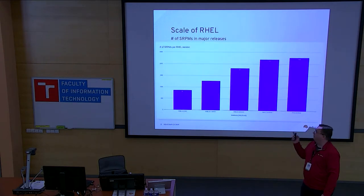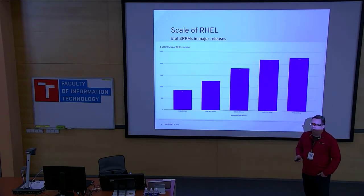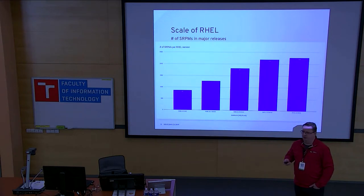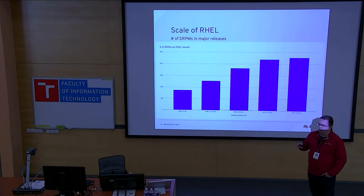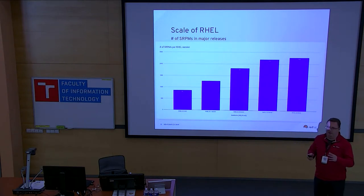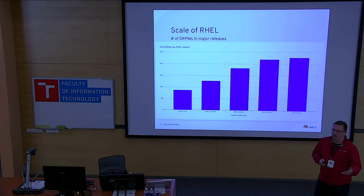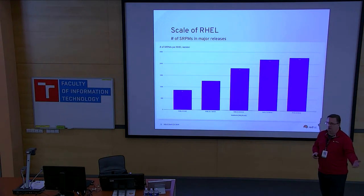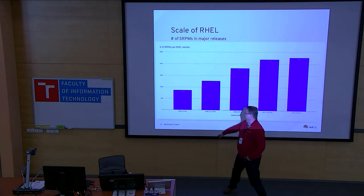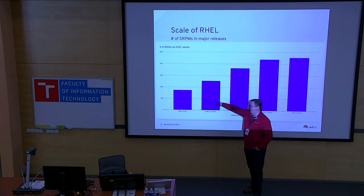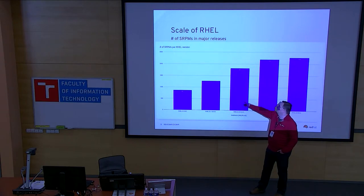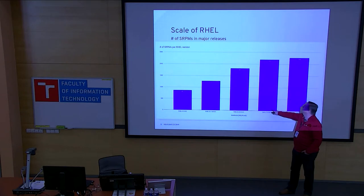RHEL is like a huge beast. One way to show the scale of RHEL is how many source RPMs we used to build the server version of the system. A source RPM is roughly equal to one upstream project being packaged for distribution. This went from about 900 in 2006 for RHEL 4 Advanced Server, through 1,300 for RHEL 5.11, to 1,900 for RHEL 6.10, to 2,200 in RHEL 7.6 last fall. RHEL 8.0 beta had a little bit over that.